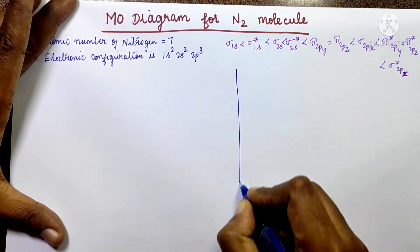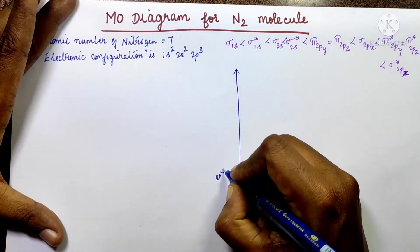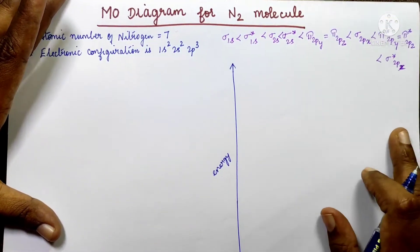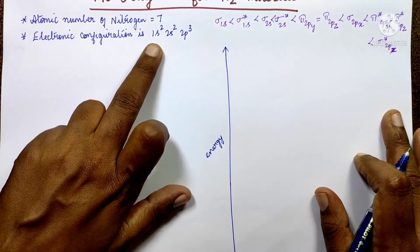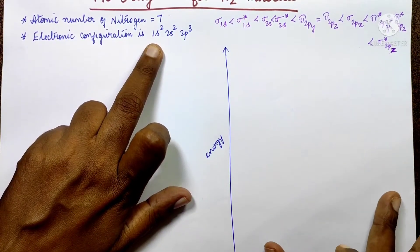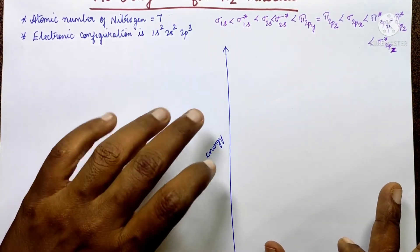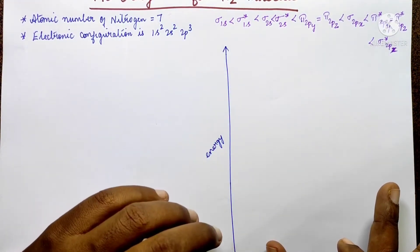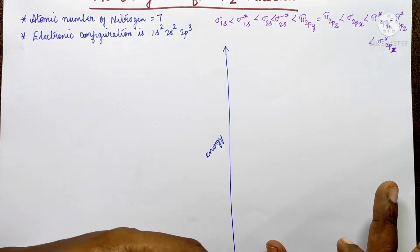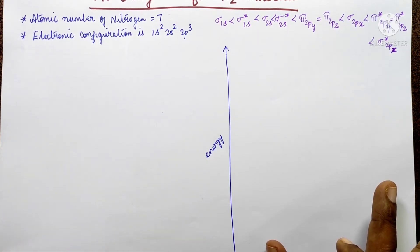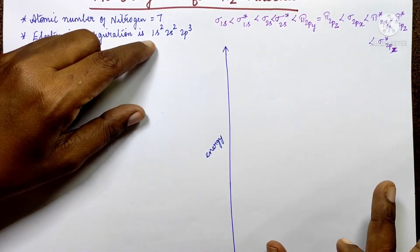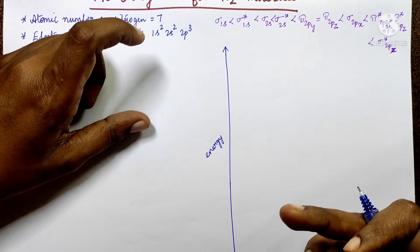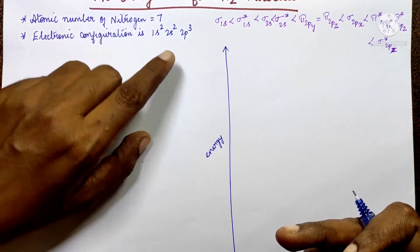The energy increases from lower to higher. The 1s² inner shell is completely filled. The bonding and anti-bonding orbitals at the inner level cancel each other out to zero, so we will proceed to calculate the bond order.